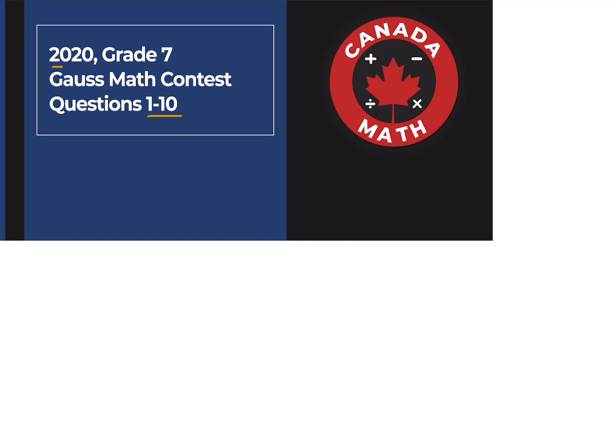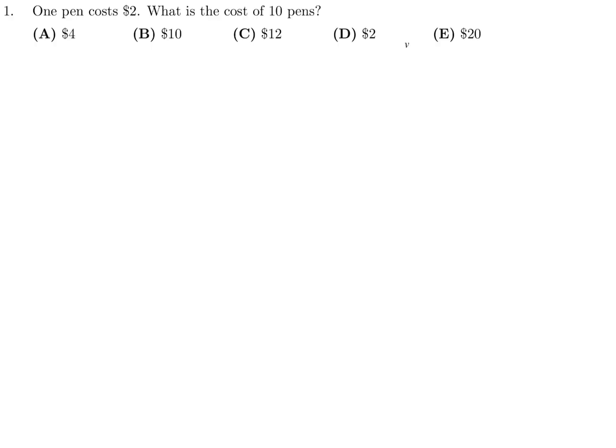Questions 1 through 10 on the 2020 Grade 7 Goss Math Contest. One pen costs $2. What is the cost of 10 pens? 10 pens, each pen is $2. Multiply 10 by 2 and you get 20. Number 1, the answer is E.